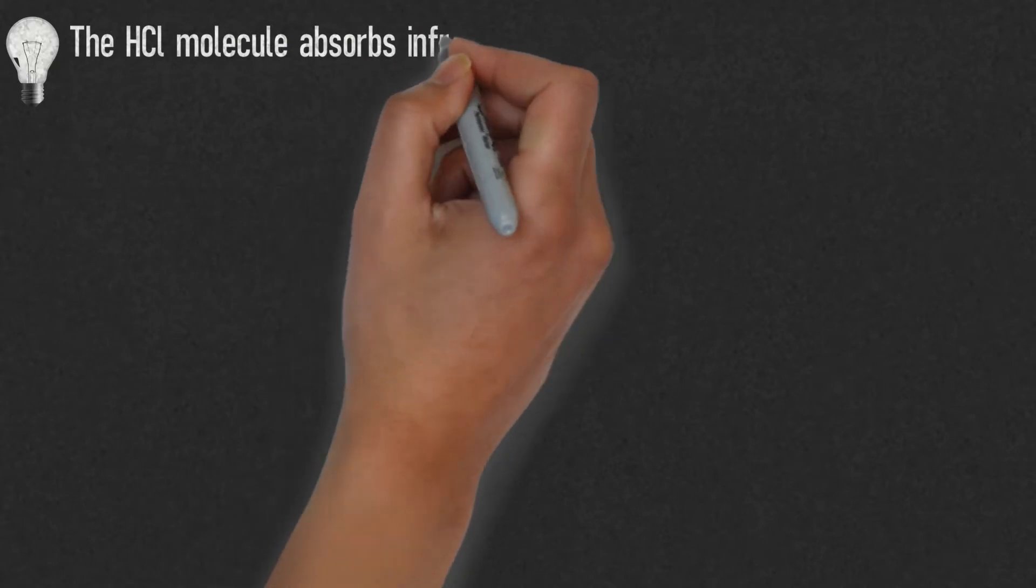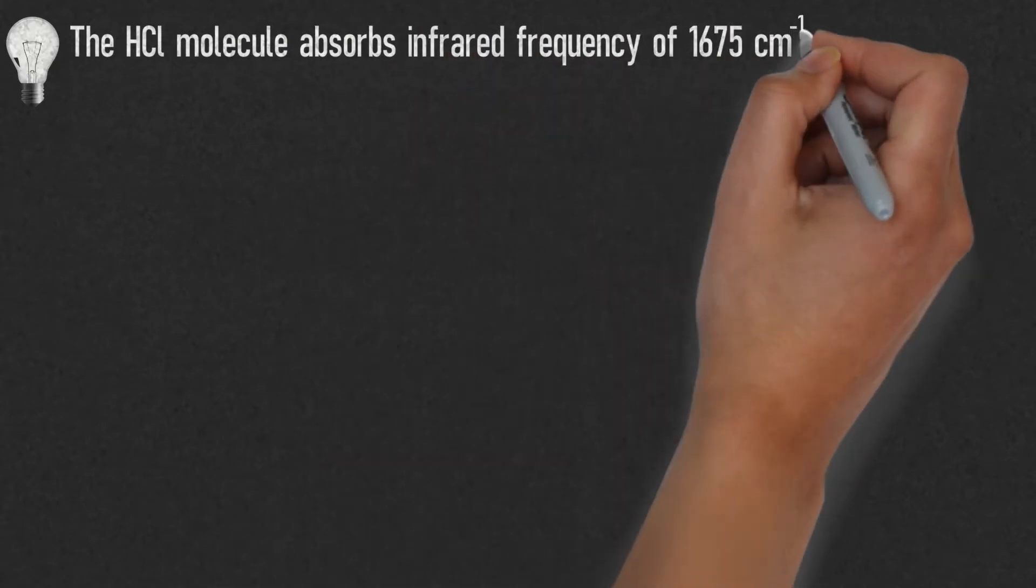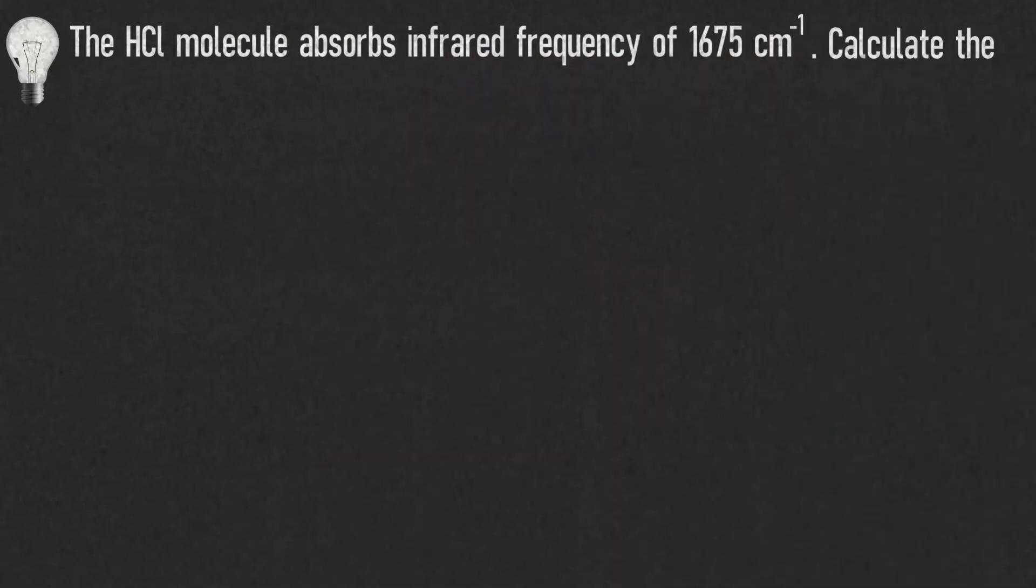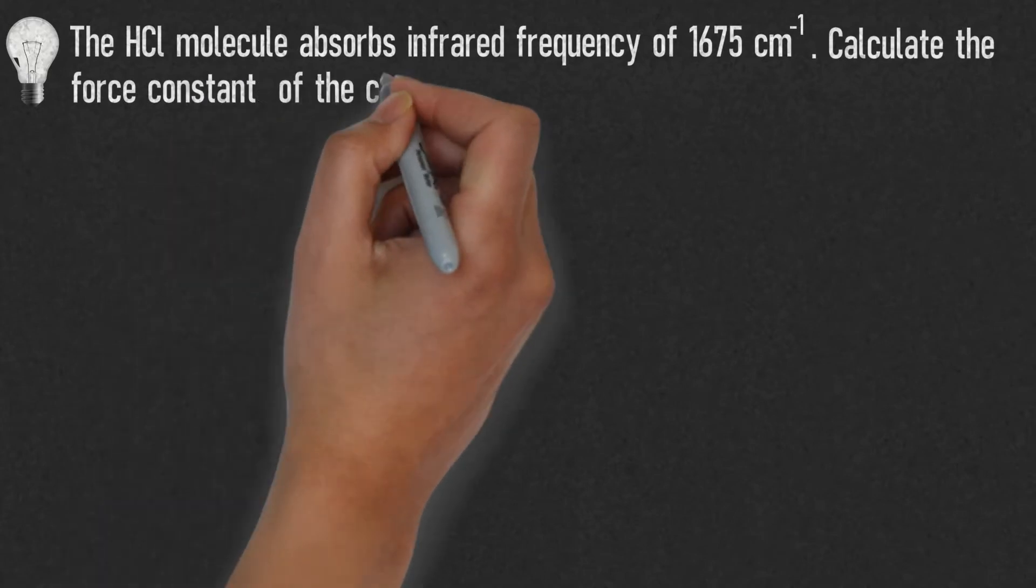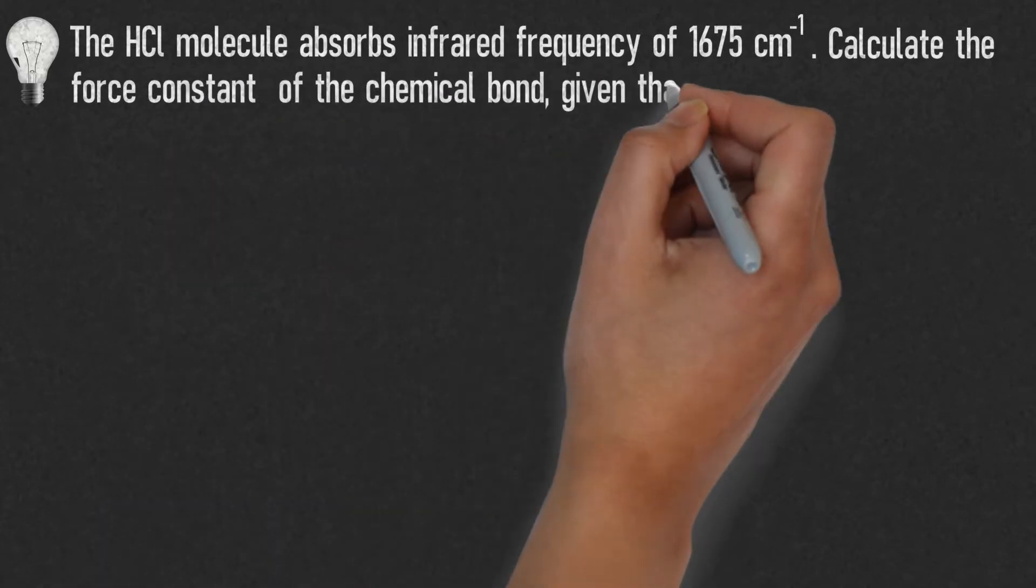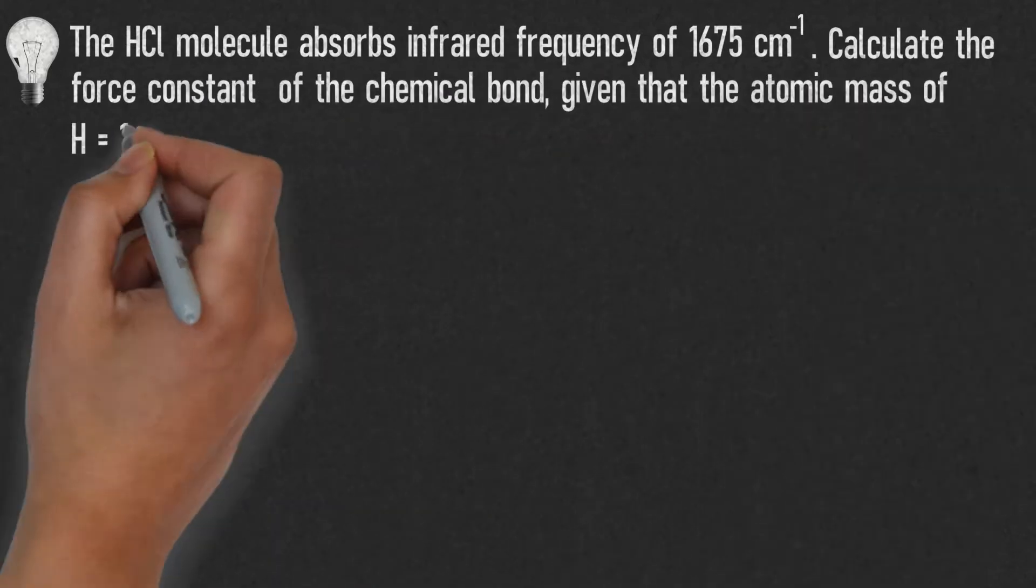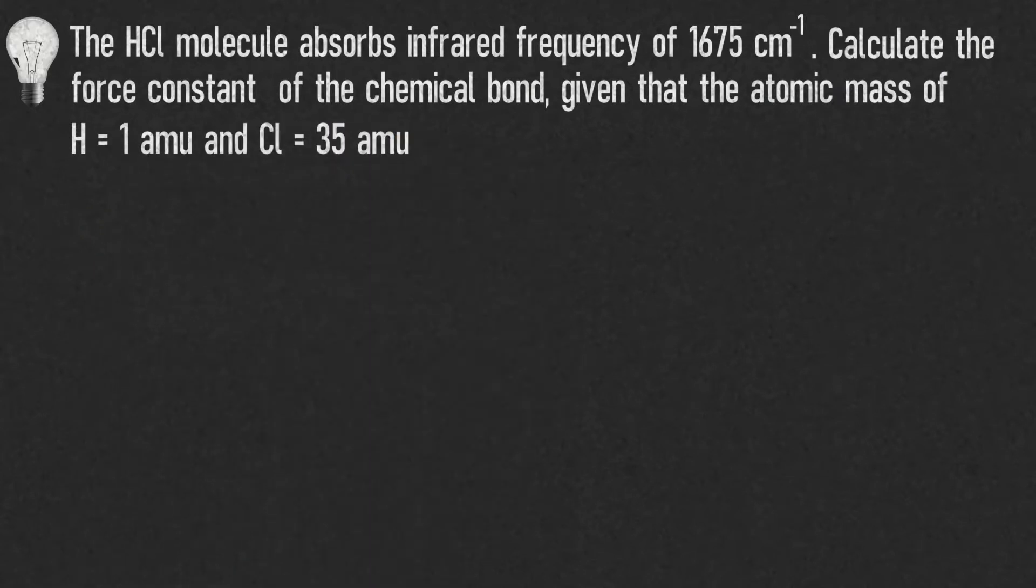Question: The HCl molecule absorbs infrared frequency of 1675 cm⁻¹. Calculate the force constant of the chemical bond, given that the atomic mass of H = 1 amu and Cl = 35 amu.